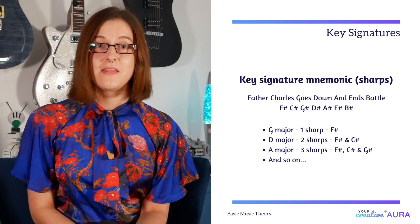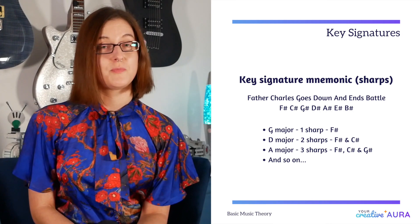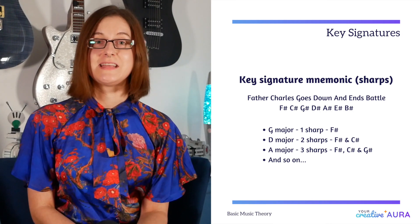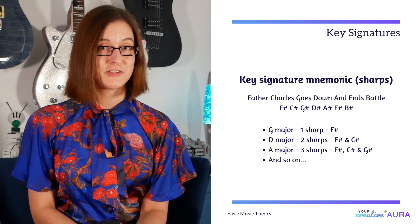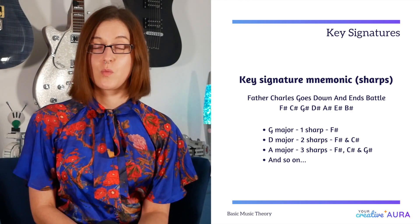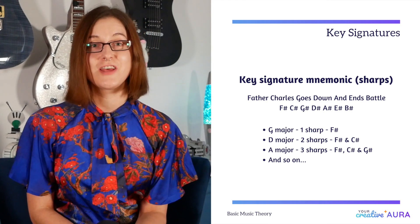This means that G major would have one sharp, which would be F sharp. D major would have two, which would be F sharp and C sharp. A major would have three: F sharp, C sharp and G sharp, and so on.